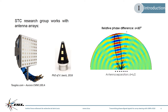Antenna arrays also allow dynamically changing the resulting radiation pattern by modifying the phase shift applied between each antenna signal. Here, by imposing minus 30 or plus 30 degree phase shift, the main lobe of the array can be steered towards minus or plus 10 degrees respectively.